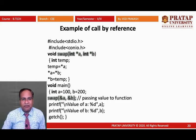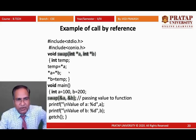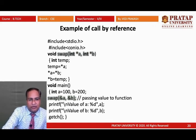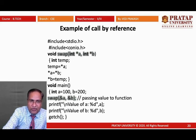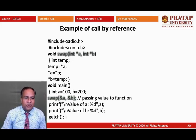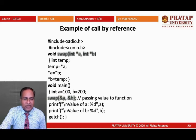In call by reference, we use pointers. When calling the function, we pass not the actual values of a and b, but the addresses of a and b. These addresses are passed to pointer variables. In call by reference functions, we pass the reference of a given parameter, and these parameters may be modified — unlike call by value where the originals remain unchanged.